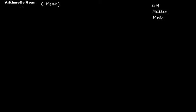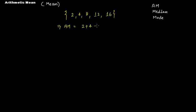If someone asks you to calculate the mean, that person actually means you have to calculate the arithmetic mean. Now suppose we have a data set: two, four, eight, twelve, and sixteen. If you have this data set and it is asked that you have to calculate the arithmetic mean, then what you have to do is first add these values — two plus four plus eight plus twelve plus sixteen. After adding these values, you have to divide by the number of values. You have one, two, three, four, and five values.